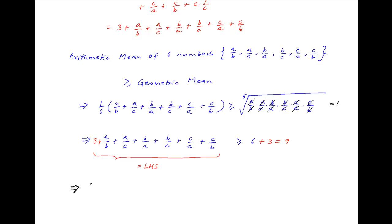It therefore follows that (a + b + c)(1/a + 1/b + 1/c) ≥ 9, which is the required result.